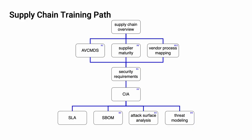Here we see the AV-CDL Supply Chain Training Path. At the top is the Supply Chain Overview, which is this presentation. Additional trainings will cover manufacturer disclosure statements (AVC-MDS), Supplier Cybersecurity Maturity, Vendor Cybersecurity Process to AV-CDL Mapping, Cybersecurity Requirements, Tailoring the Cybersecurity Interface Agreement, Service Level Agreements (SLAs), Software Bill of Materials (SBOMs), Attack Surface Analysis, and Threat Modeling.